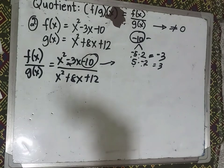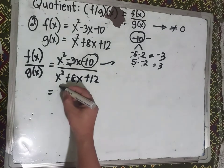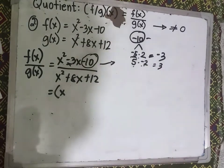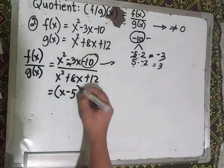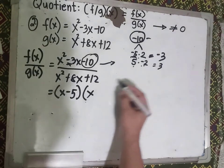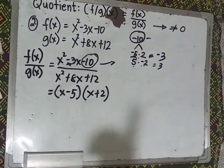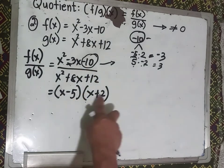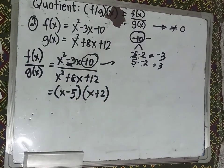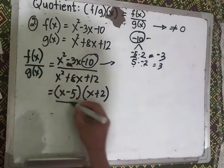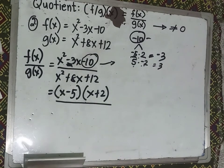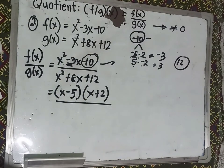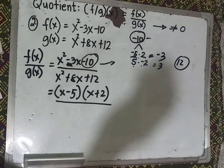The factor of the numerator is (x − 5)(x + 2), because multiplying gives −10 and adding gives −3. Now for the denominator: what two numbers multiply to positive 12 and add to positive 8?